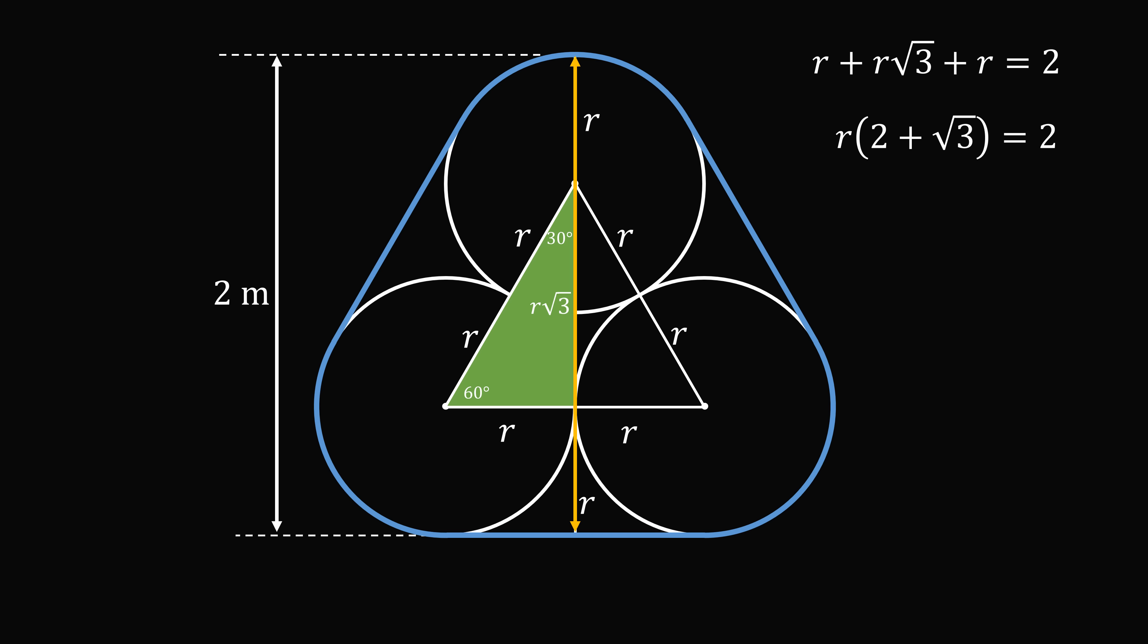We can simplify this equation to get r multiplied by 2 plus root 3 is equal to 2, and that means r is equal to 2 divided by 2 plus root 3. So we've solved for r.